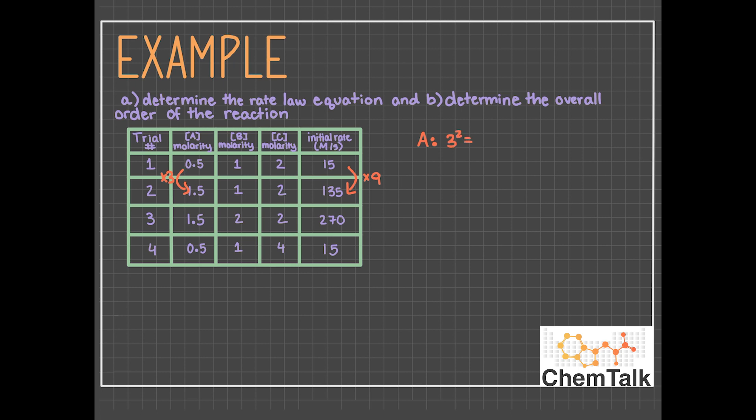So we'll first figure out the order for each reactant. From trials 1 to 2, A's concentration triples, and the rate increases by a factor of 9. So 3 to the 2nd power is 9, so A is second order. B doubles from trials 2 to 3, and the rate also doubles. So 2 to the 1st power is 2, so the order is first order.